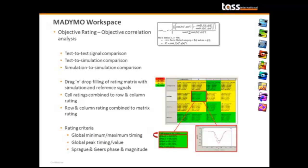The objective rating tool is ideally suited to eliminate subjective comparison between simulation results and test results. With its drag-and-drop interface, a rating matrix is easily and efficiently set up. A comparison between curves can be made on various criteria ranging from simple criteria like peak value or peak timing, or as complex as a weighted integrated factor method, the Sprague-Geers phase and magnitude comparison, and the corridor and cross-correlation method.